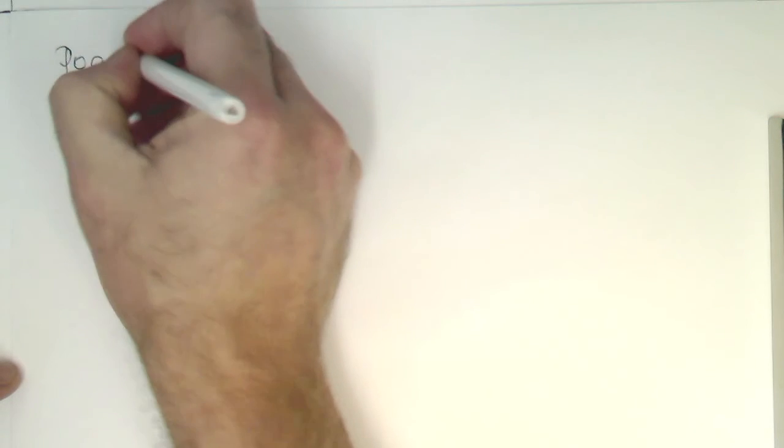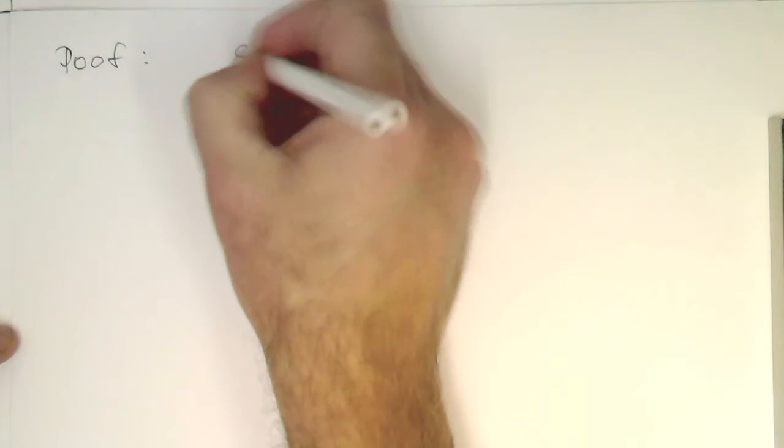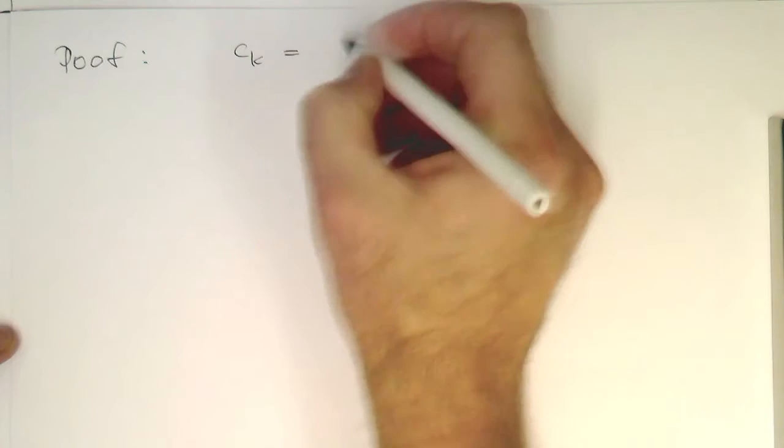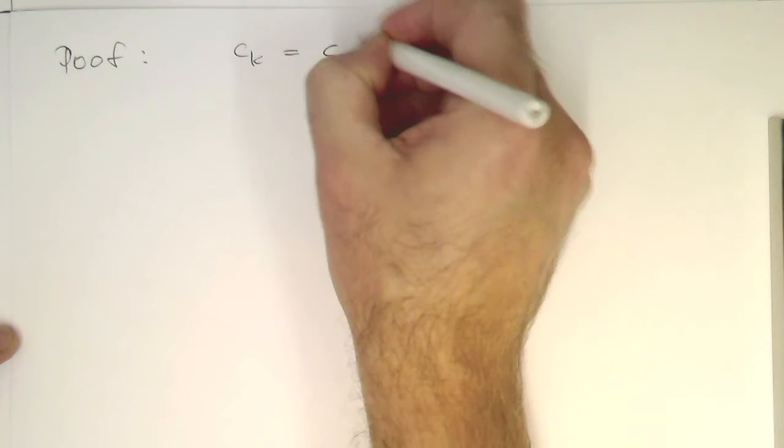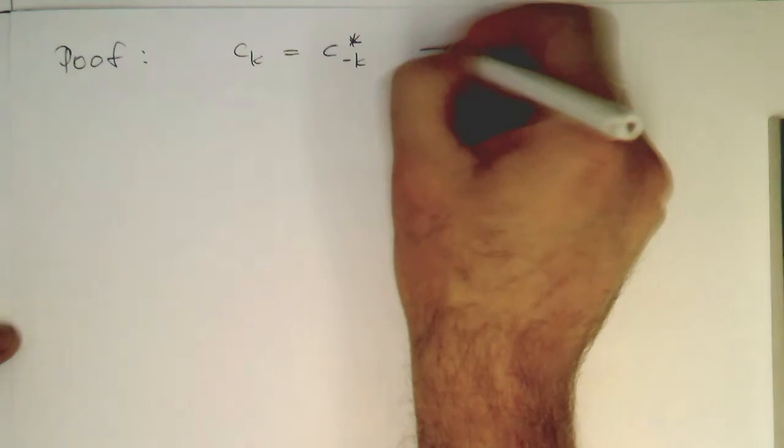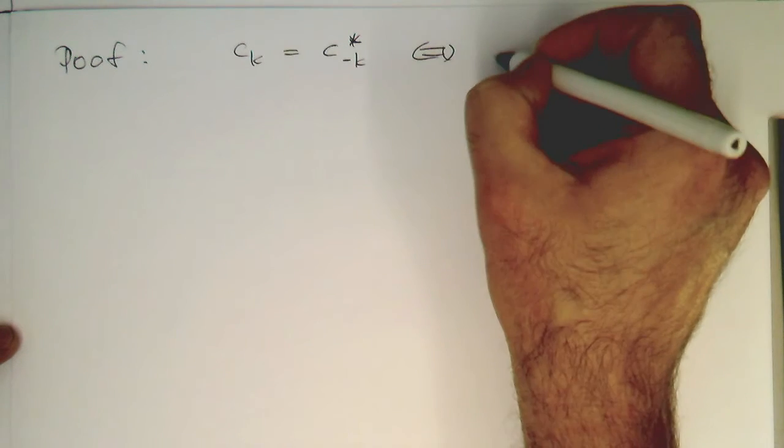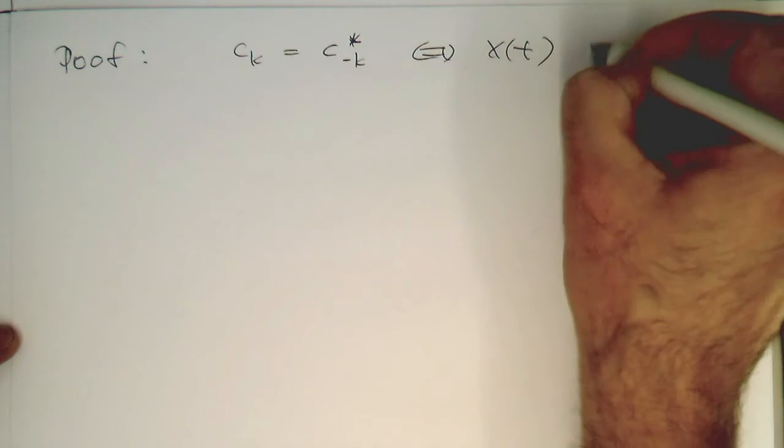So let's now prove that if ck equals c_{-k} star, that this means that x(t) is real.